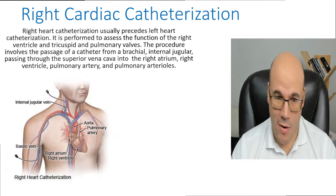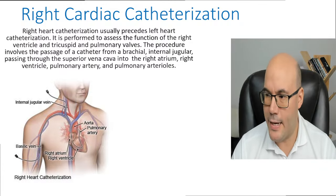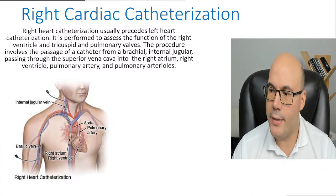What is a right cardiac catheterization? A right heart catheterization usually precedes a left heart catheterization — sometimes they are done one after the other. It is performed to assess the function of the right ventricle and the tricuspid and pulmonary valves. The procedure involves passage of a catheter through the brachial or internal jugular vein, passing through the superior vena cava into the right atrium, right ventricle, pulmonary artery, and pulmonary arterioles.